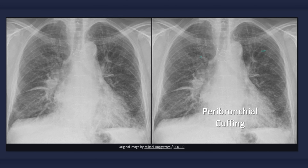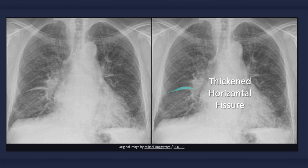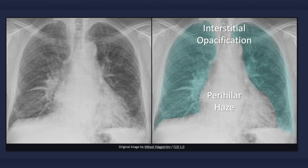Peribronchial cuffing is another discrete finding which occurs due to edema of the bronchial wall. When viewed head-on it appears as a donut or ring; when viewed tangentially — that is, from the side — it appears as two parallel lines resembling tram tracks. Note that peribronchial cuffing can occur in other conditions as well, such as chronic bronchitis. Also evident in this image is a thickened minor, or horizontal, fissure — a finding easier to detect on a lateral radiograph where both oblique and horizontal fissures may be visible. Collectively, interstitial edema results in widespread blurring of lung markings, producing a hazy appearance of the lung fields and hilum bilaterally.